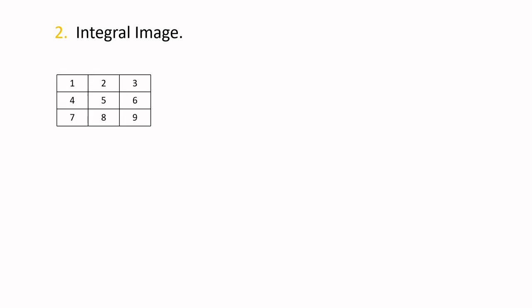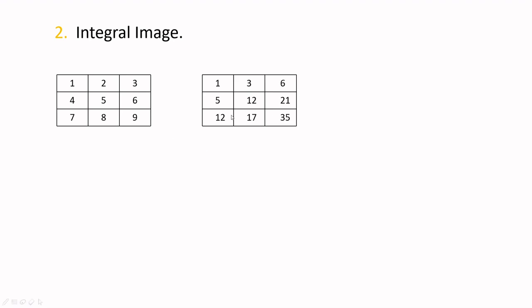The integral image is somewhat easy to understand, though you won't fully understand why it's needed right now — just understand how it works. Any image is simply a combination of numbers in a 2D matrix. Since we are dealing with grayscale images, we have a 2D matrix. What you need to understand is that every cell of the integral image is computed in a specific way — I'll explain how it is formed.